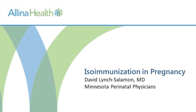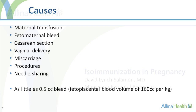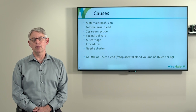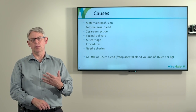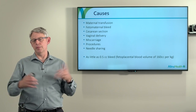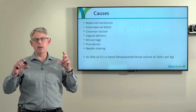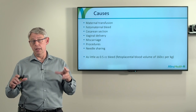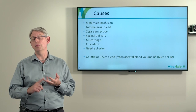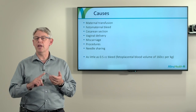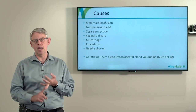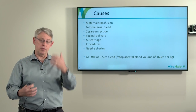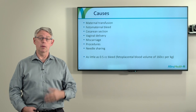Today's discussion is about isoimmunization in pregnancy. The ways that mom can be exposed to blood for which she may become sensitized include a variety of situations: if she gets a transfusion with blood that is not compatible with her, or if fetal blood enters her system. There's a certain amount of fetal blood that enters the system in any pregnancy, about 0.1 cc's, but there are times when there can be an increased risk of fetal-maternal bleeding — with delivery, with caesarean section, with trauma, miscarriages, any procedures such as amniocentesis or CVS, and even needle sharing that may result in contamination of maternal blood.